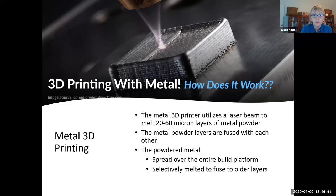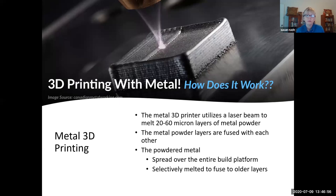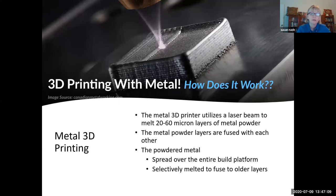The 3D printer utilizes a laser beam that melts 20 to 60 micron layers of metal powder. The metal powder layers then re-fuse with each other — either by spreading the metal powder over the entire build area, or by using it to diffuse into older layers. This also means you can use it for repair.